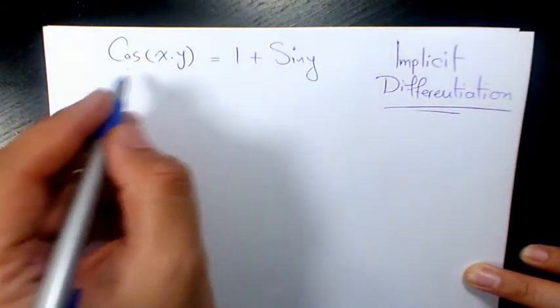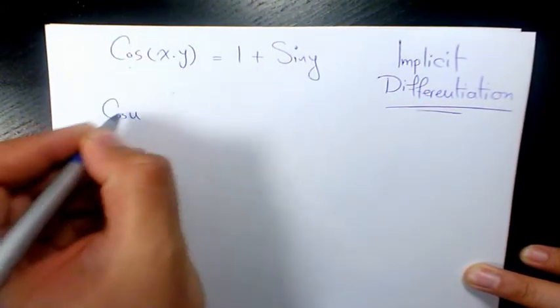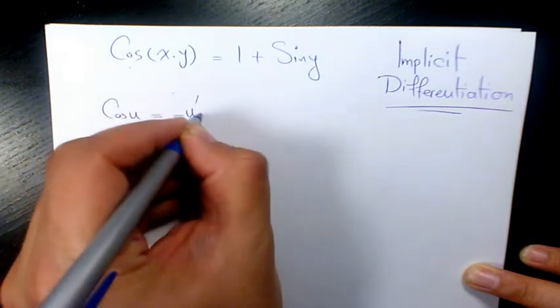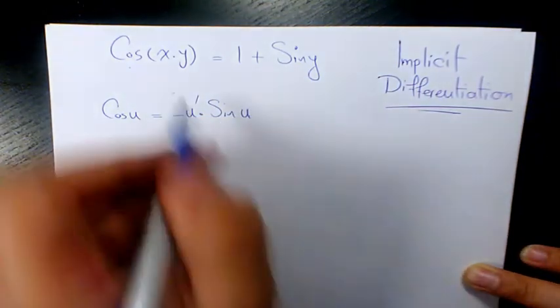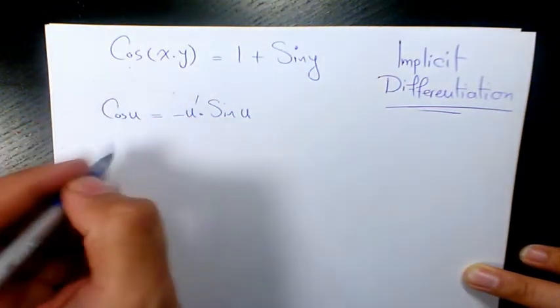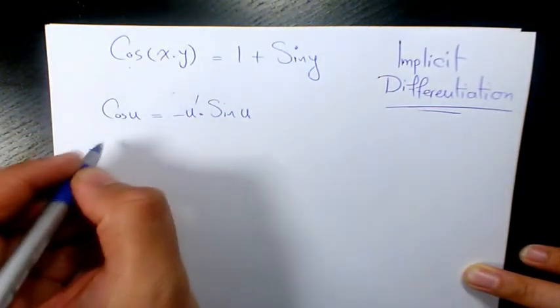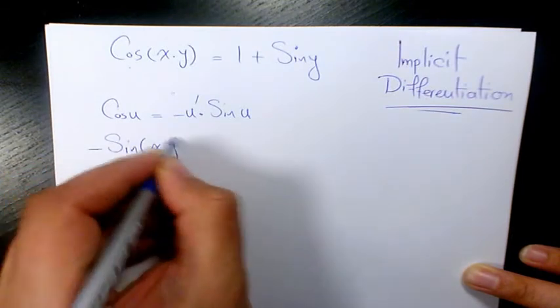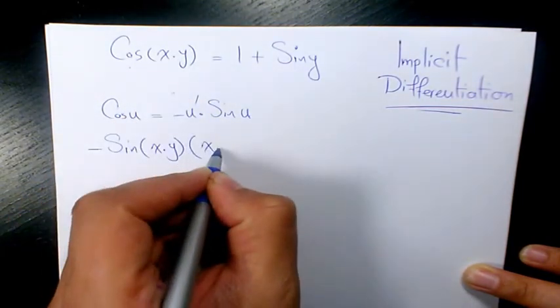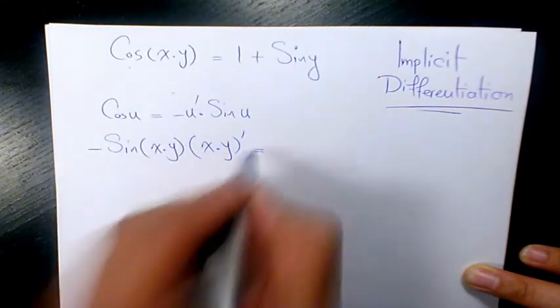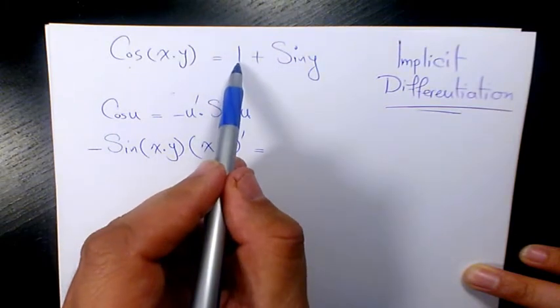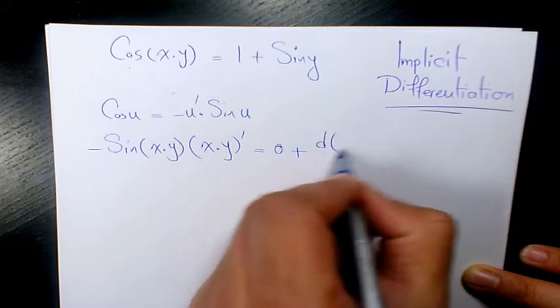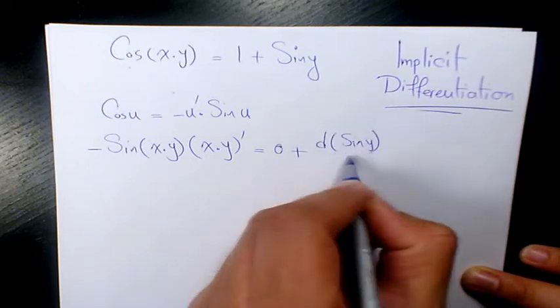The derivative of cosine u, we know that when u is a function of x, is going to be negative u prime times sine u. So we can do the same thing here. It's going to be negative sine xy times the derivative of xy, equals the derivative of 1 with respect to x, which is 0, plus the derivative of sine y with respect to x.